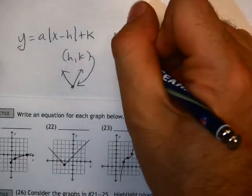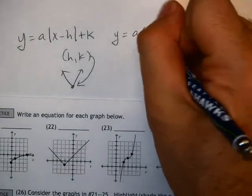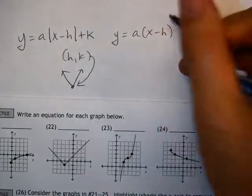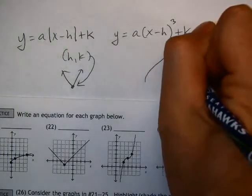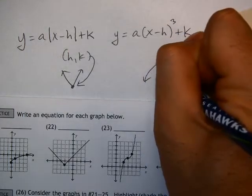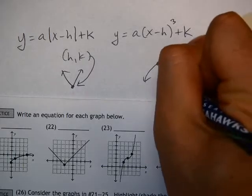The other couple that are in here are the cubic, which is virtually the same, x minus h cubed plus k. And the cubic curve looks like this, where instead of calling it a vertex, this h and k is kind of like your middle point. It's kind of where that curve, the exact middle point of where that curve goes through.